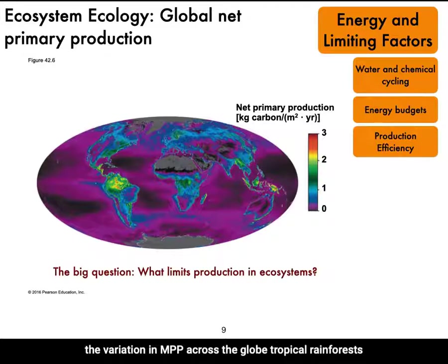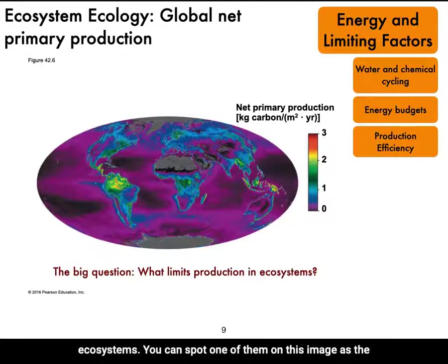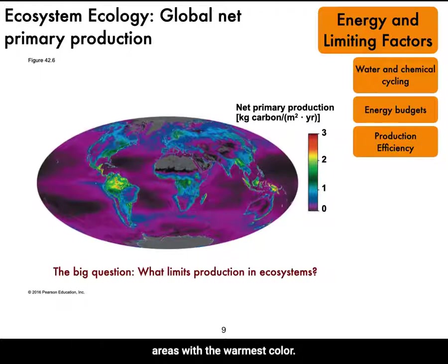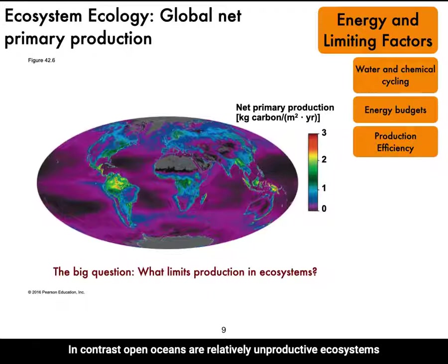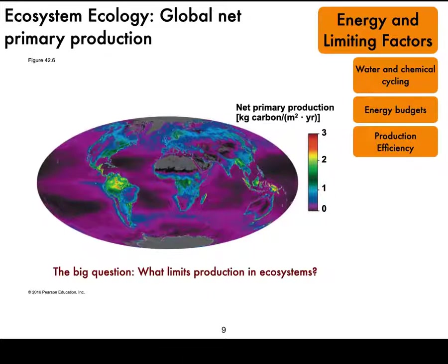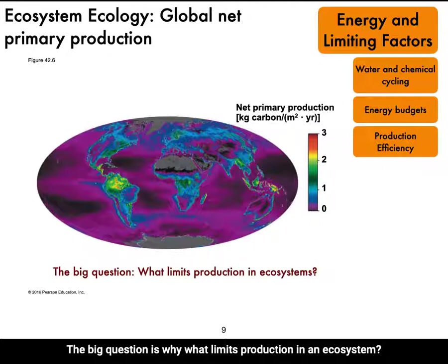Tropical rainforests, often near the equator, are some of the most productive terrestrial ecosystems — you can spot them on this image as the areas with the warmest color. In contrast, open oceans are relatively unproductive ecosystems, shown in purple. The big question is why — what limits production in an ecosystem?